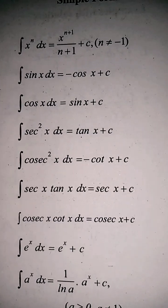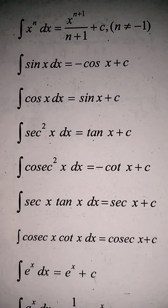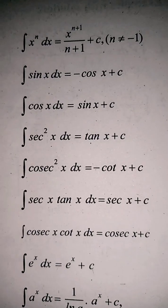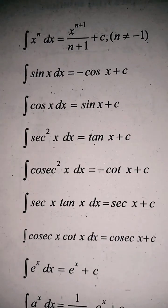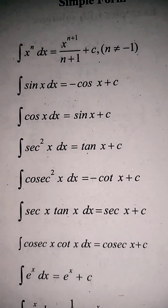The integration of cosecant square x is minus cot x plus c. The integration of secant x tan x is secant x plus c. And the integration of cosecant cot x is cosecant x plus c.